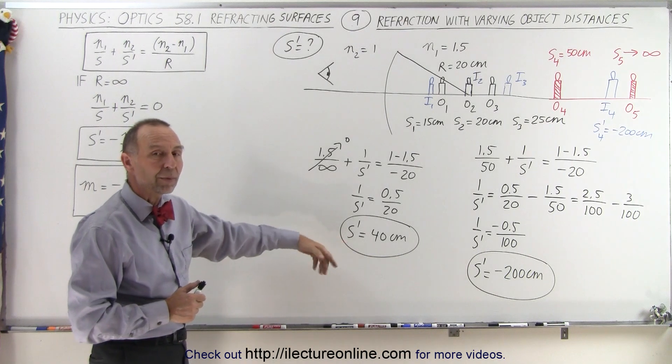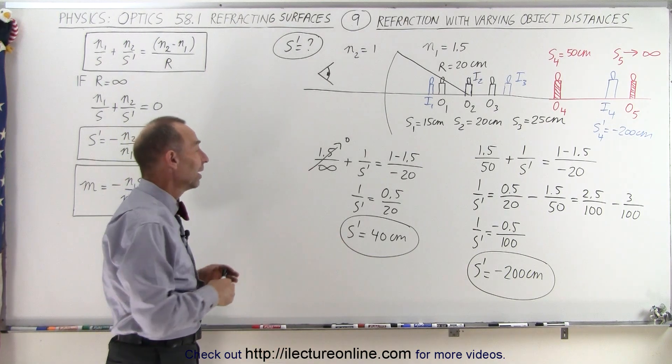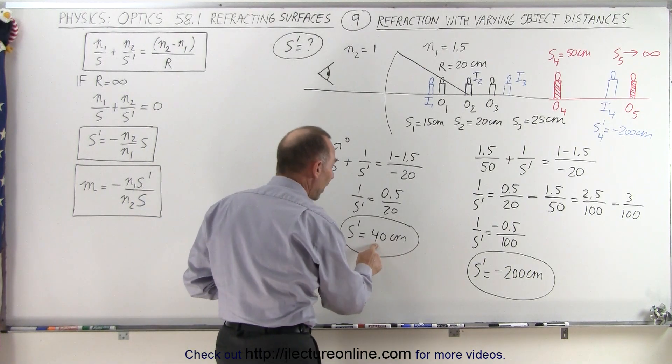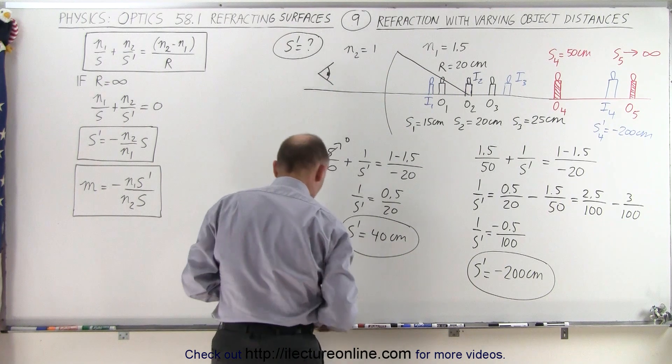...the s prime distance now becomes positive, which means it's now going to be on the other side. And notice that it's going to be twice the distance as the radius of curvature on the other side.